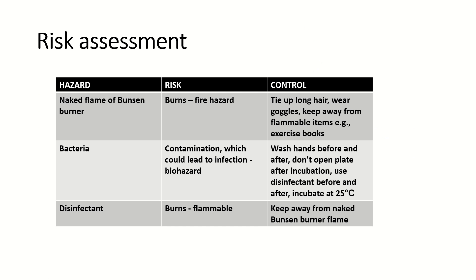This is just a quick table showing you the risk assessment. You have three main hazards here. The first is the naked flame of the Bunsen burner, which poses an obvious risk of burns as it is a fire hazard. In order to prevent this risk: tie up long hair as it could get caught in the fire, wear goggles, and keep away from flammable items such as your exercise books or instructions for the practical.